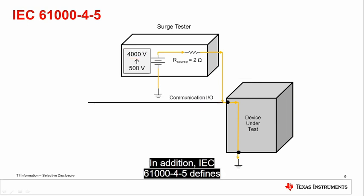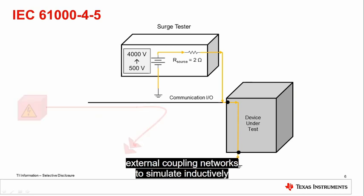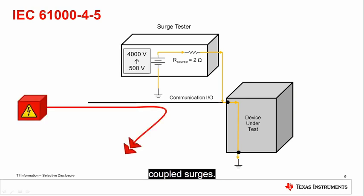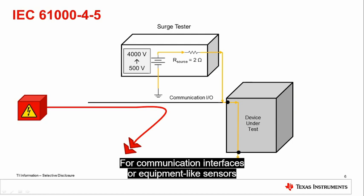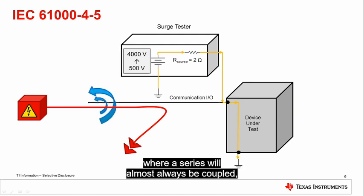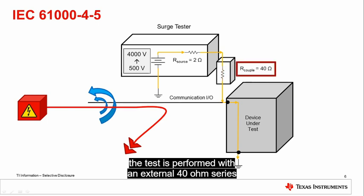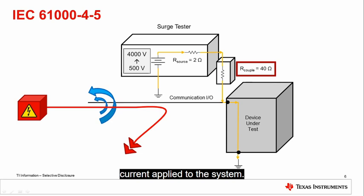In addition, IEC 61,000-4-5 defines external coupling networks to simulate inductively coupled surges. For communication interfaces or equipment like sensors, where surges will almost always be coupled, the test is performed with an external 40 ohm series resistance, significantly attenuating the surge current applied to the system. This models the attenuation of the fault due to the inductive coupling.